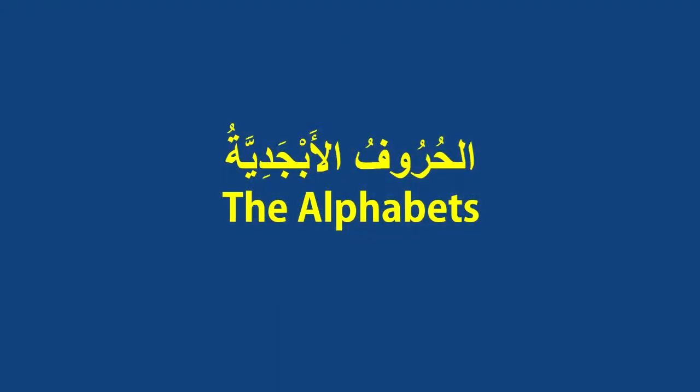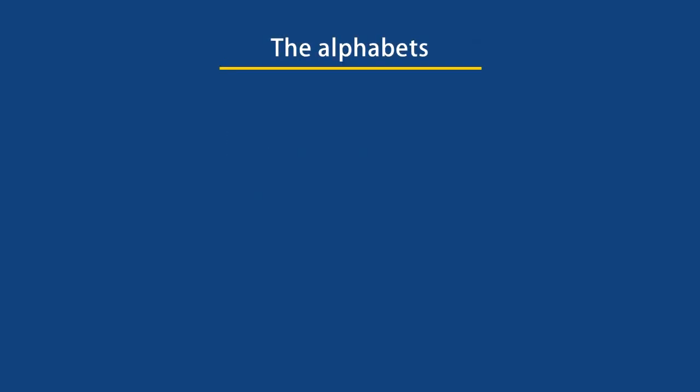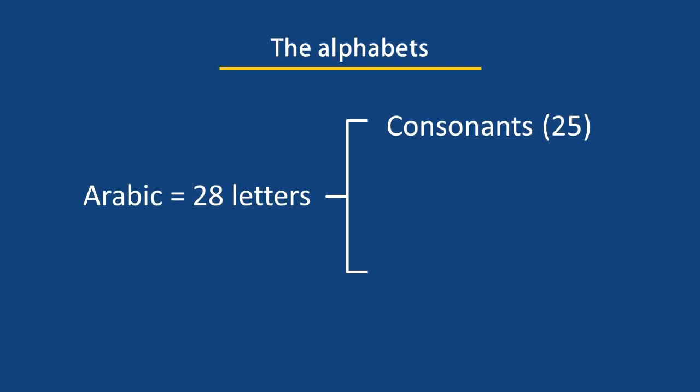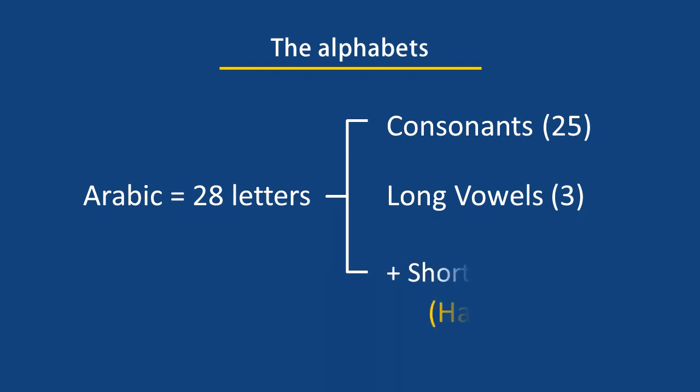Arabic has 28 letters: 25 of them are consonants and three are long vowels. There are also three short vowels in Arabic — they are not letters but marks placed over or under a letter to help make pronunciation smooth. I'm going to explain the vowels in detail first, and then we'll cover the consonants.